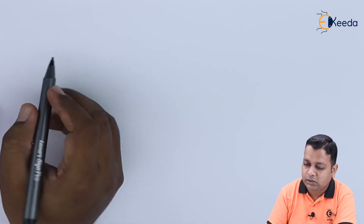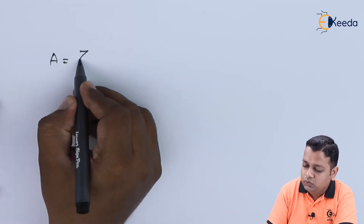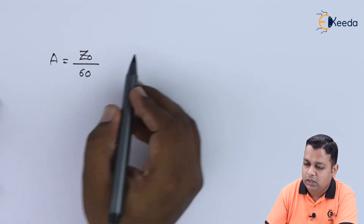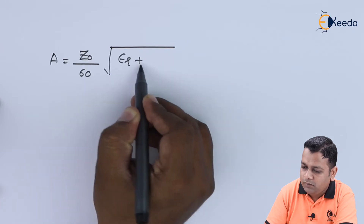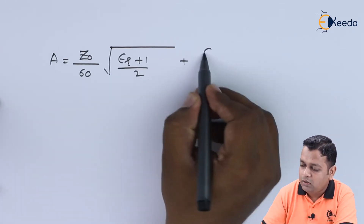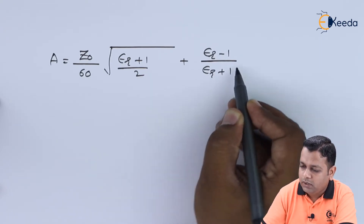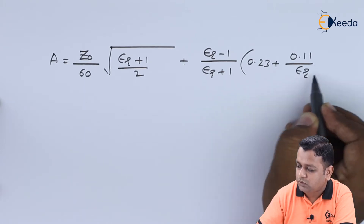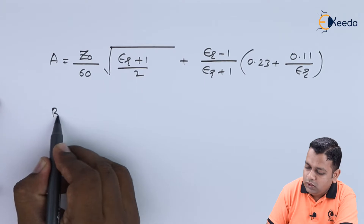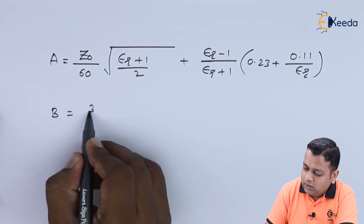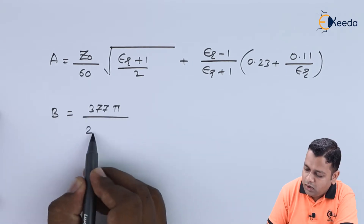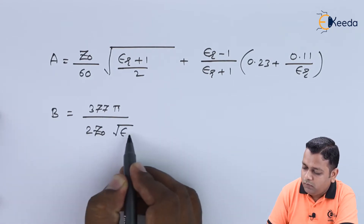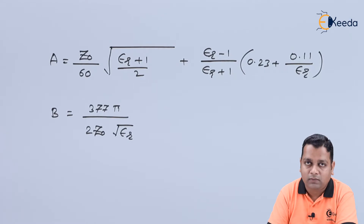Capital A is used for the first condition and capital B for the second. Capital A is: A = (Z0 / 60) × sqrt((epsilon_r + 1)/2) + ((epsilon_r − 1)/(epsilon_r + 1)) × (0.23 + 0.11/epsilon_r). Capital B is: B = 377π / (2 × Z0 × sqrt(epsilon_r)). These formulations are used to get the calculation for w/d.